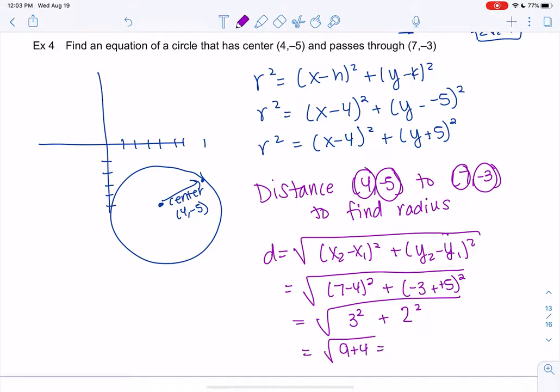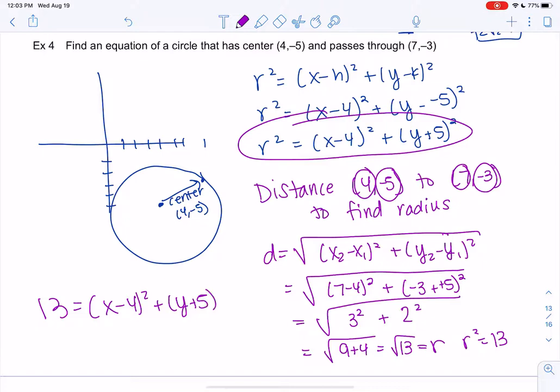So we get a weird radius. 9 plus 4 is 13. So square root of 13 is my radius. And so we'll just plug in. We know everything already. So r squared would be 13, and so our formula will be 13 equals x minus 4 squared plus y plus 5 squared. That's our equation.